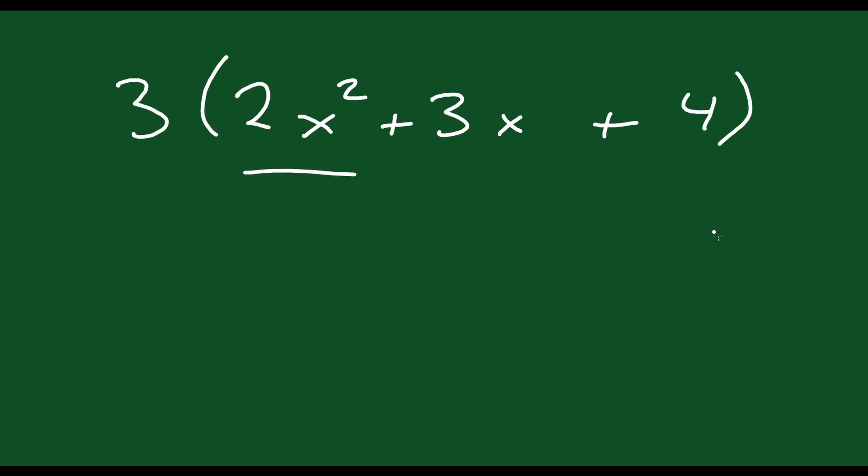There are three terms here instead of 2. That's okay. We do the exact same process. We multiply this number by every single term in the brackets.